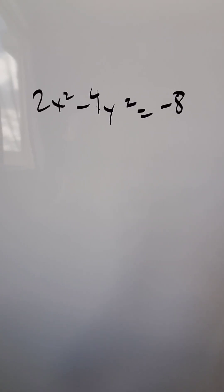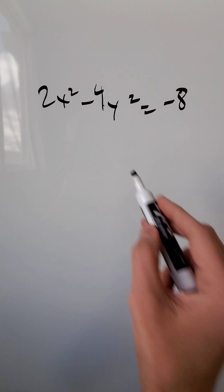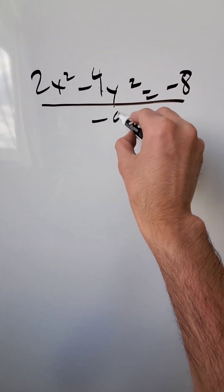I have the equation here for a particular conic section. What is it and what is the eccentricity? 2x² - 4y² = -8. Start by dividing everything by -8.